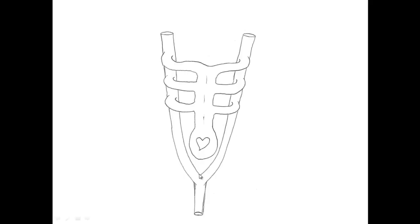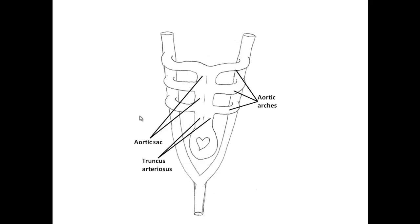Hi everyone. Today we're going to be discussing the formation of the aortic arches and how they contribute to the mature and final blood supply that we see in gross anatomy. This process is very complicated and very difficult to visualize, so the accompanying illustrations are not going to be 100% accurate in terms of timing and size, but they will show the overall morphology.